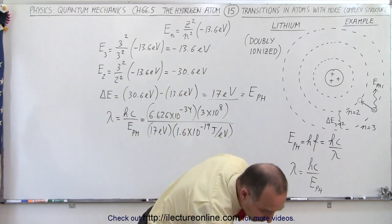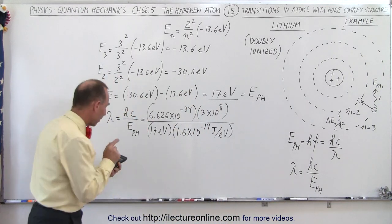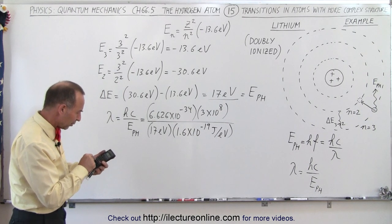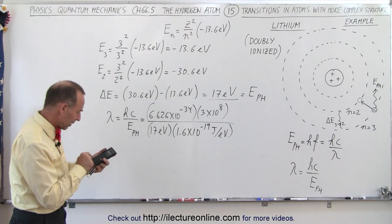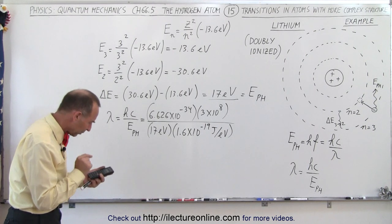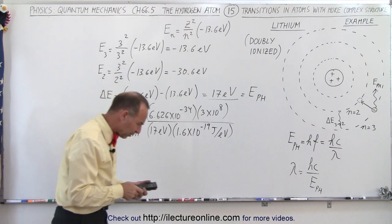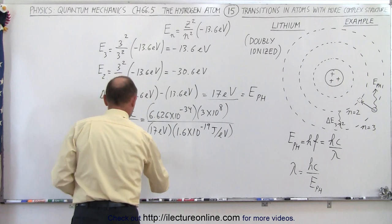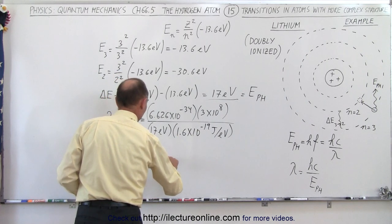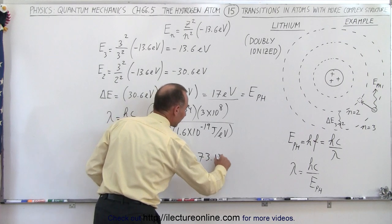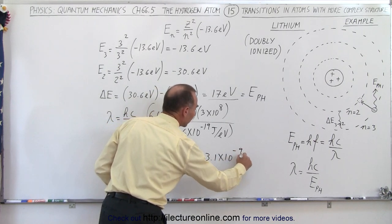And now with a calculator, what will be the wavelength of that photon? So we have 6.626e to the minus 34 times 3e to the 8 divided by 17 divided by 1.6e to the minus 19 equals, and that would be 73.1, yes, 73.1 nanometers, which is 73.1 times 10 to the minus 9 meters.